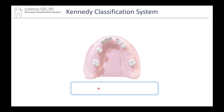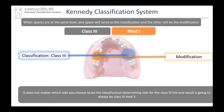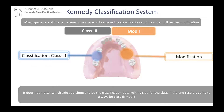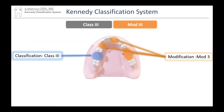Starting from the back moving forward, we see two spaces at the same level that are both bounded with teeth. We don't have a classification for a bilateral bounded area, so we call one the classification and the other the modification. Either choice gives us a Class 3 Mod 1 — it doesn't matter which you choose. Continuing forward, we encounter Modification 2 and then one more space, giving us Modification 3.